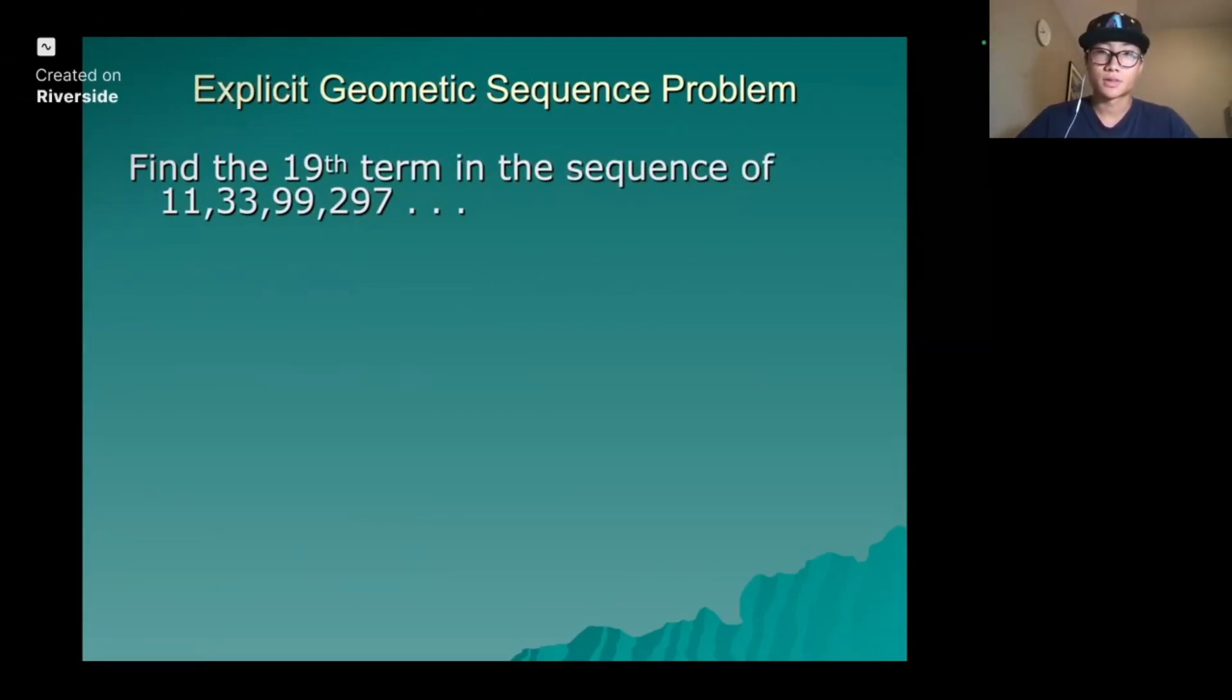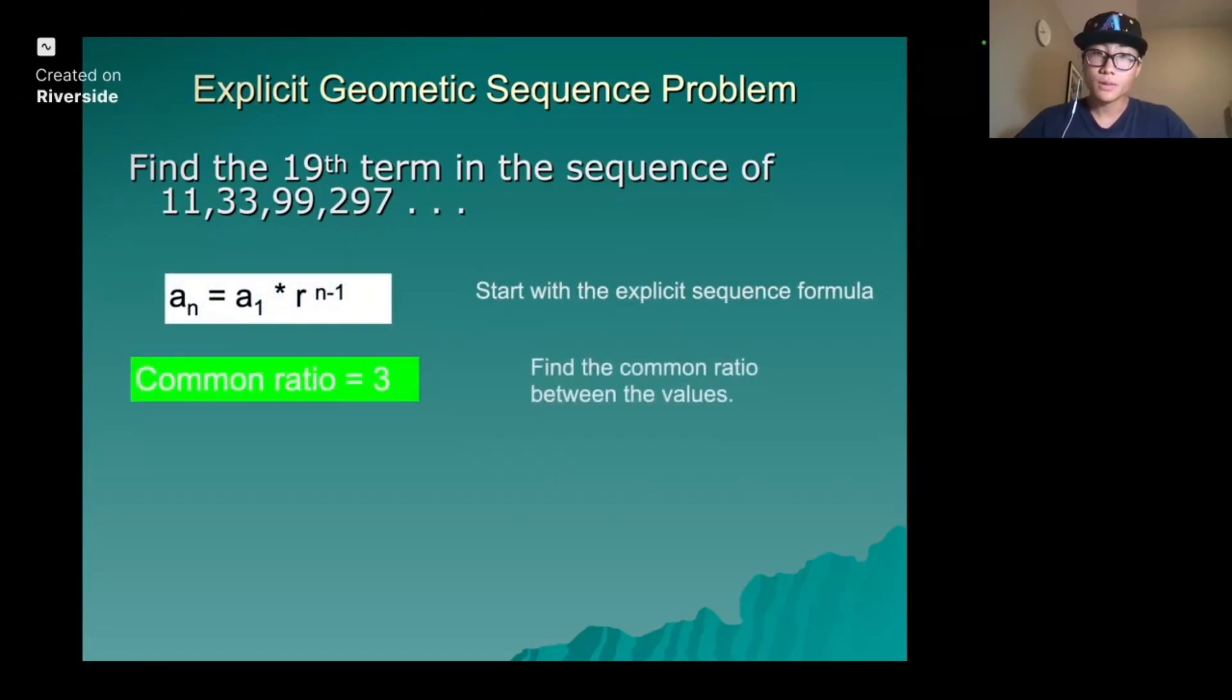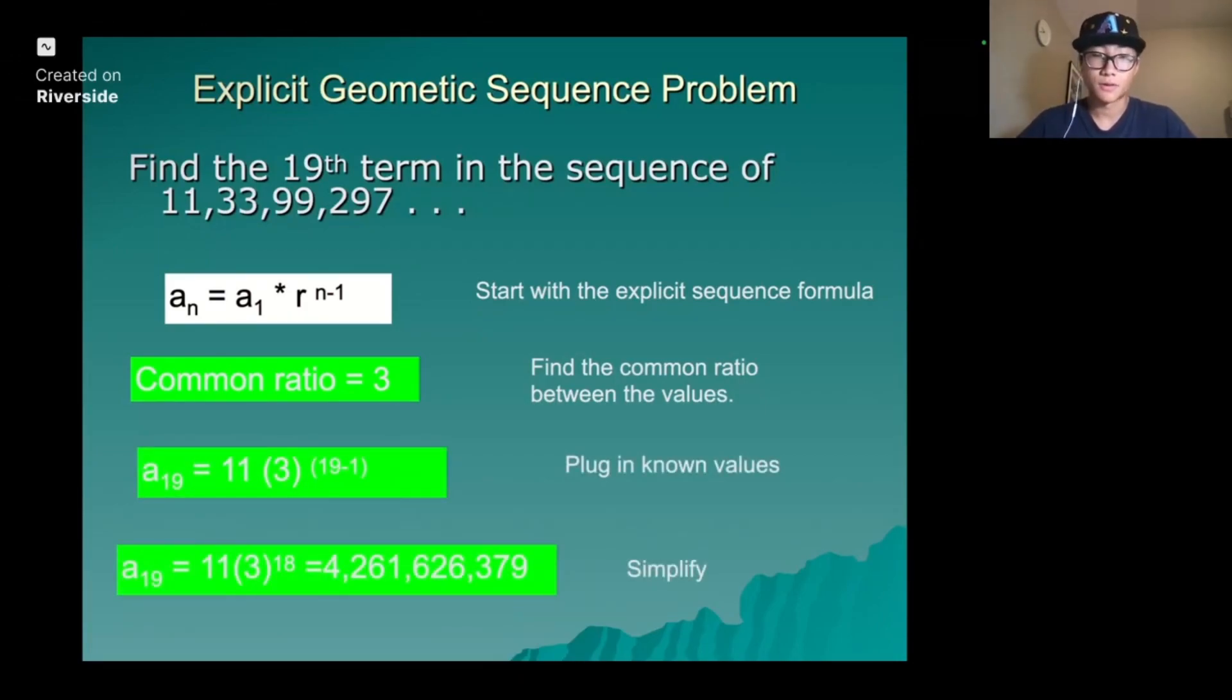Explicit geometric sequence problem. Find the 19th term in the sequence: 11, 33, 99, 297. In this case, it would be the same. Start with the formula, find the common ratio, plug in known values and simplify. And bam, we have it.